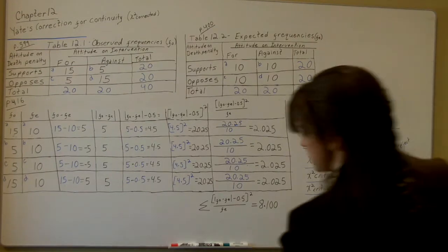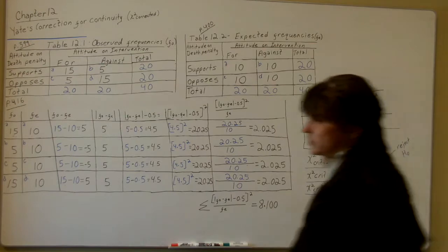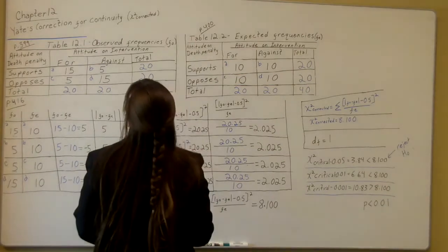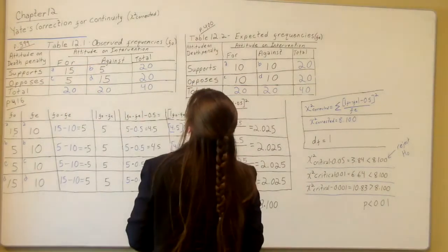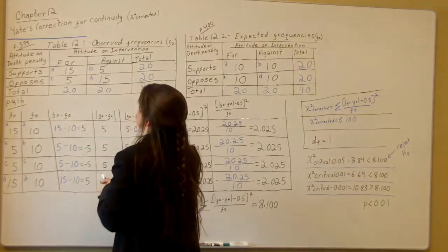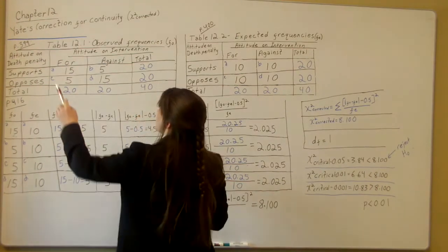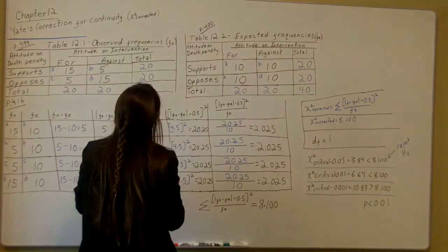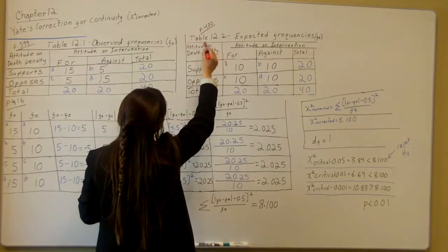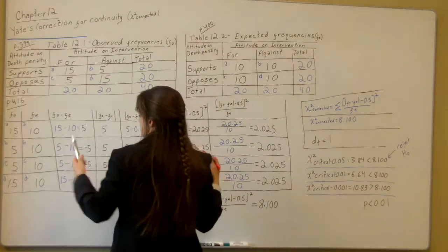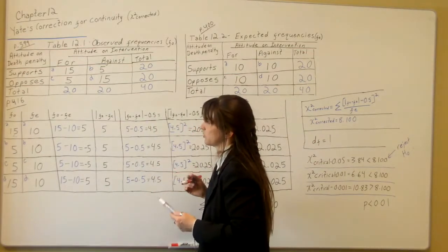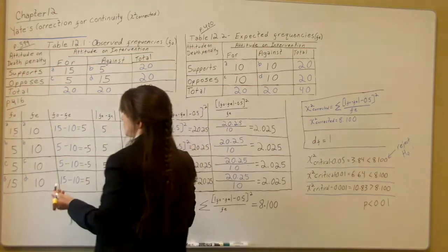Hello. This video is to help you with Cirkin Chapter 12. The data for this video uses Yates' correction for continuity, which is also the chi-squared corrected. The observed frequencies are found on Table 12.1, page 399, and the expected frequencies from Table 12.2, page 400 of your Cirkin textbook. The primary page we're going to be using is page 416, so turn to page 416 and we'll talk right through this.